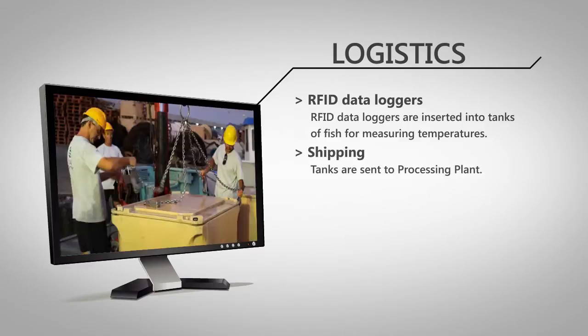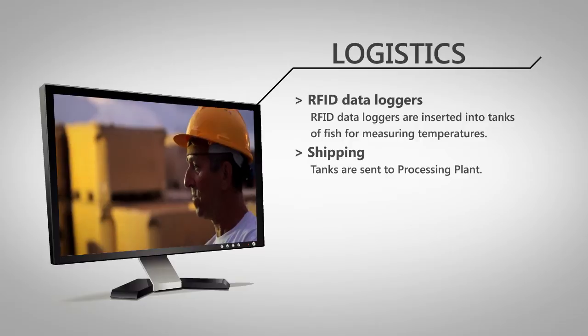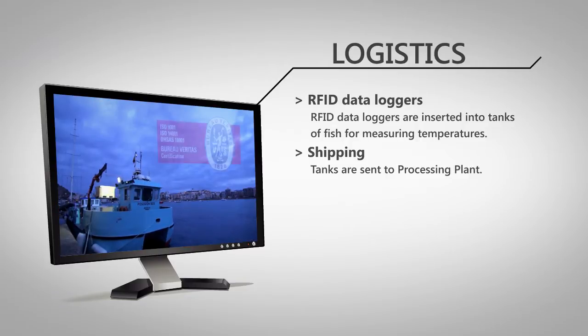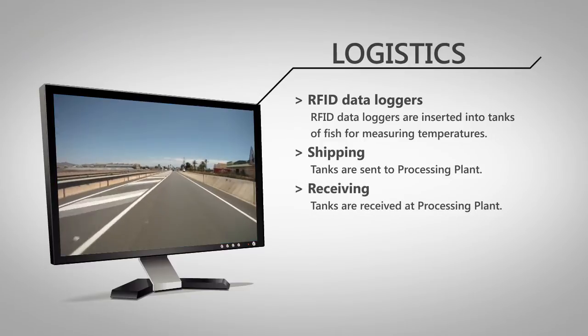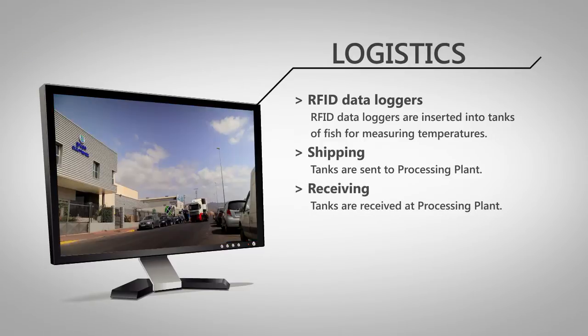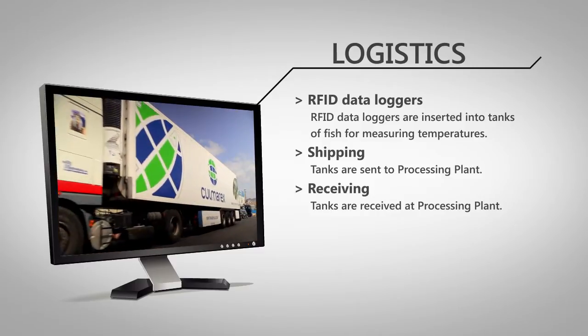When the tanks arrive at the dock, they are loaded into refrigerated trucks that transport them from each growing farm to the processing plant. The fish is received in the processing plant, the tanks are unloaded and with the handheld reader the tag of the truck is read.